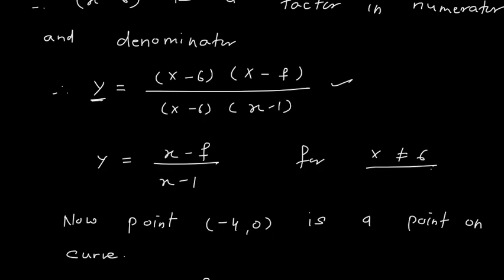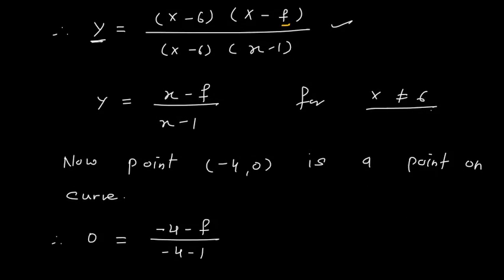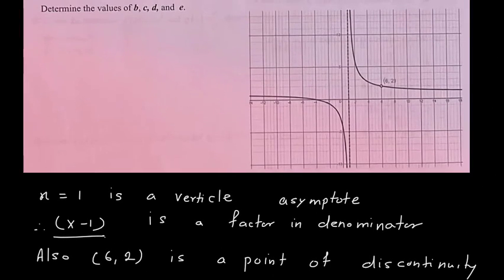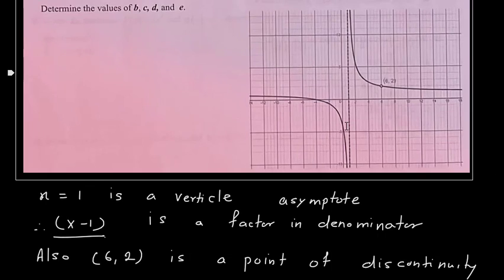Here there is only one unknown, which is f. Once I know f, I can find the numerator and denominator in quadratic form. To find f, I first cancel (x-6) from numerator and denominator, giving y = (x-f)/(x-1). Now I look for another point on this graph.